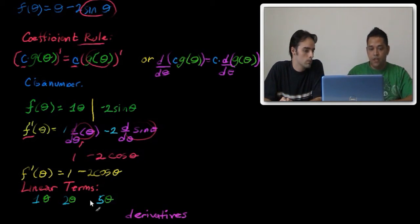Well, the derivative for these would just be the coefficients that you have. So that's a little shortcut that you could use. The derivative for this would be 1, the derivative for this would be 2, and the derivative for this would be 5.